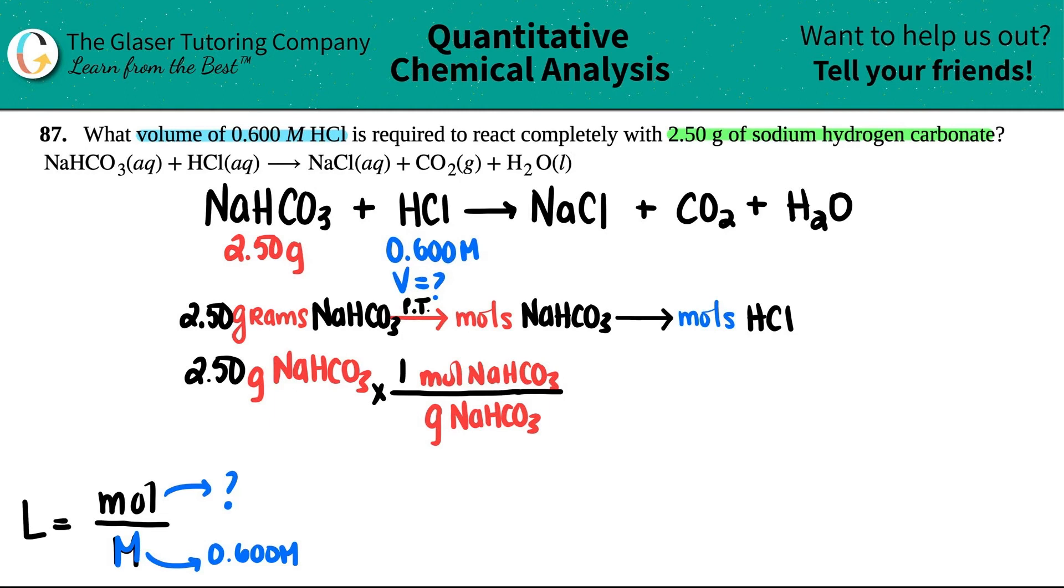Let's see what the molar mass of NaHCO3 is. So Na, 22.99, plus H, 1.008, plus 1 carbon, 12.01, plus 3 oxygen, 3 times 16. So I get roughly 84.008 grams of NaHCO3 cancels.